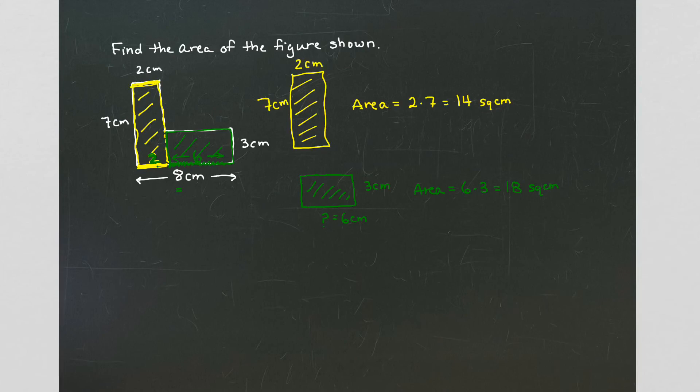My final step is to get the total area. And to do that I simply add up the yellow rectangle area plus the green rectangle area. So I'm going to take 14 and add to it 18. That gives me a total of 32 square centimeters for the entire L shape.